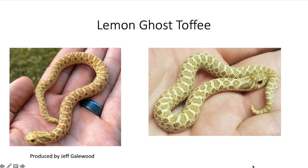When you combine the lemon ghost and the toffee you get one of the prettiest hog nose snakes out there. Especially look at the picture on the left-hand side produced by Jeff — that is one of the prettiest hog noses I've ever seen. That orange-yellow color is very unique. At the Daytona Reptile Expo I saw a toffee lemon ghost that looked just like the one on the right-hand side — they're very yellow-greenish animals that get more yellow as they age.